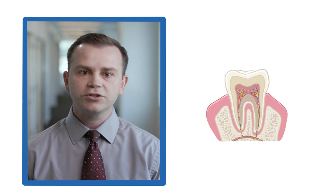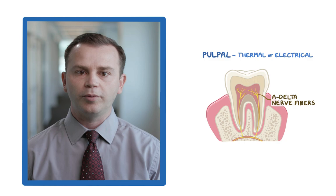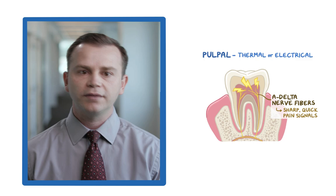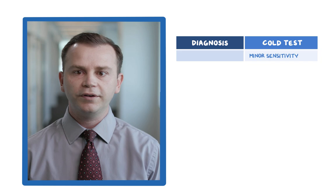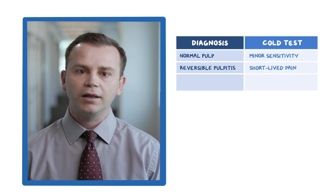Each tooth will have both a pulpal and periapical diagnosis. The pulpal diagnosis is tested by thermal or electrical stimulus. A-delta nerve fibers near the pulp's periphery create sharp, quick pain signals in response to stimulus. This sort of response can be found in health or pulpitis. Minor sensitivity to cold in a test tooth that is consistent with other control teeth would suggest normal pulp. Short-lived pain to cold is found in reversible pulpitis.